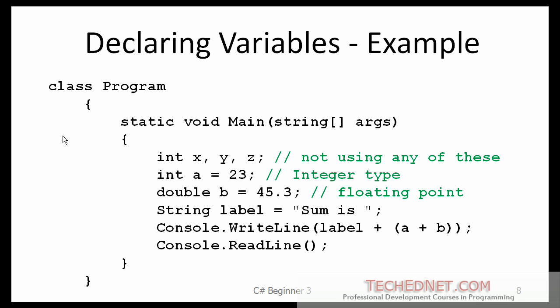Here is an example. On the first line, I am declaring three variables, x, y, z. They are all of the int type. On the second line, I am declaring one variable, a, which is of the int or the integer type and I am assigning an initial value to it, 23. The next one is a double type called b and it has been given a value of 45.3. After that, we have a variable called label, a string type, which contains the label that I will be using for displaying my results.